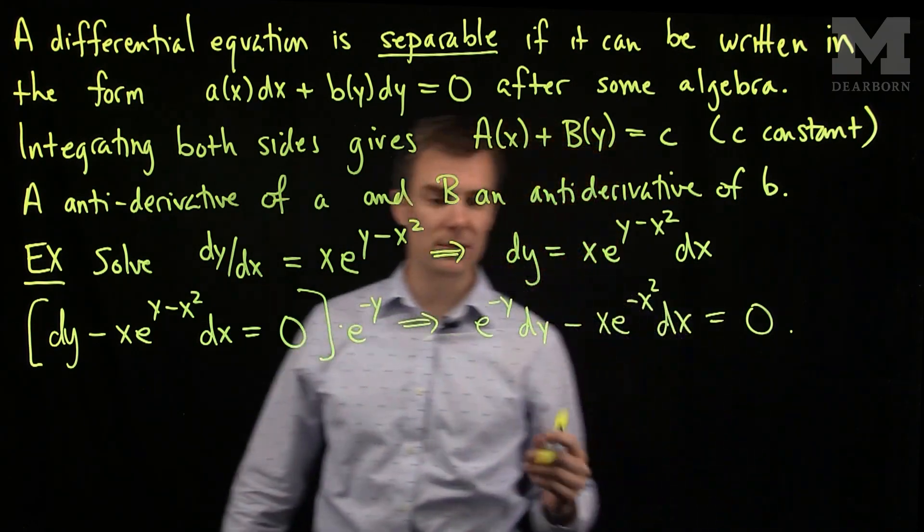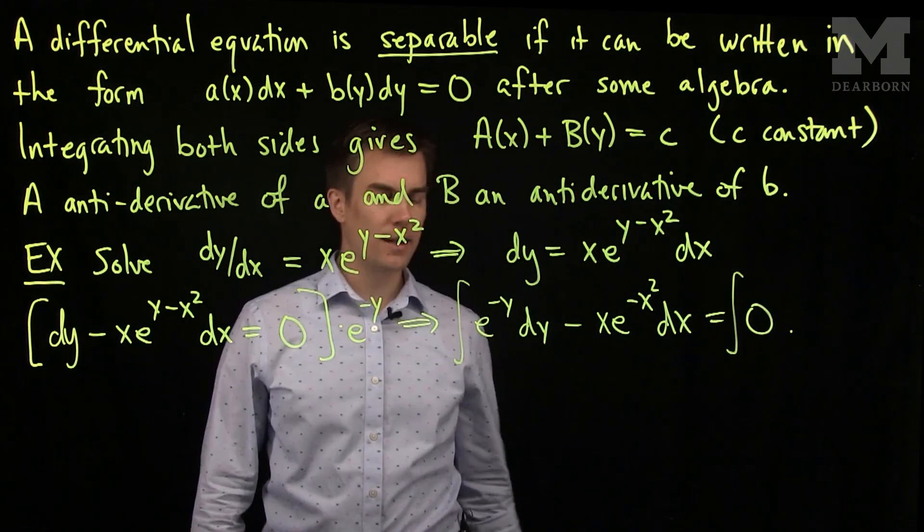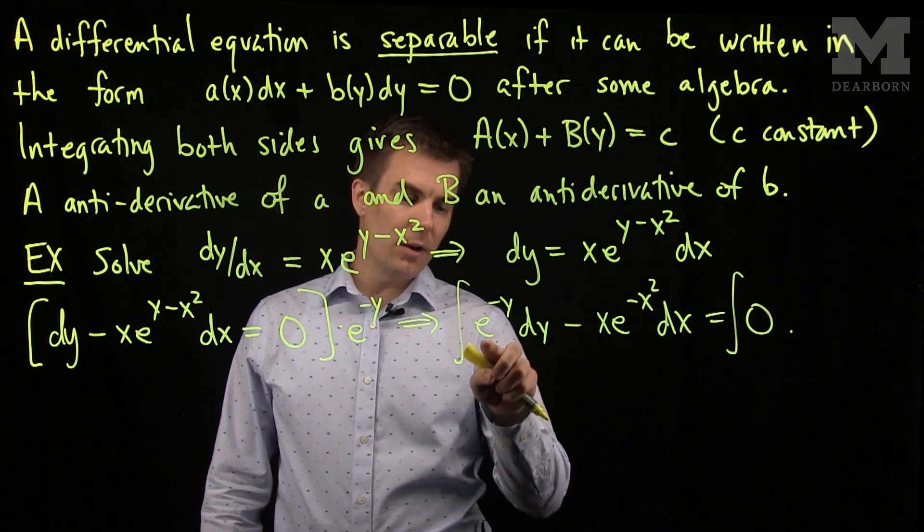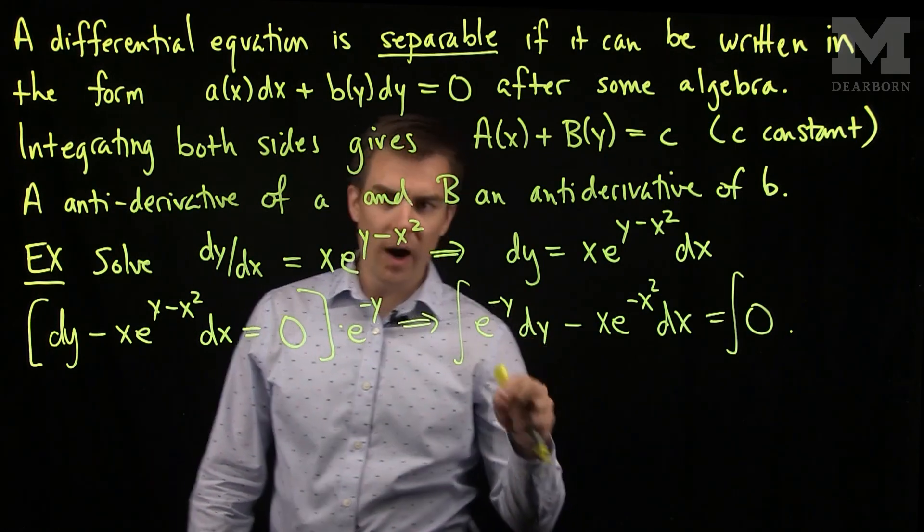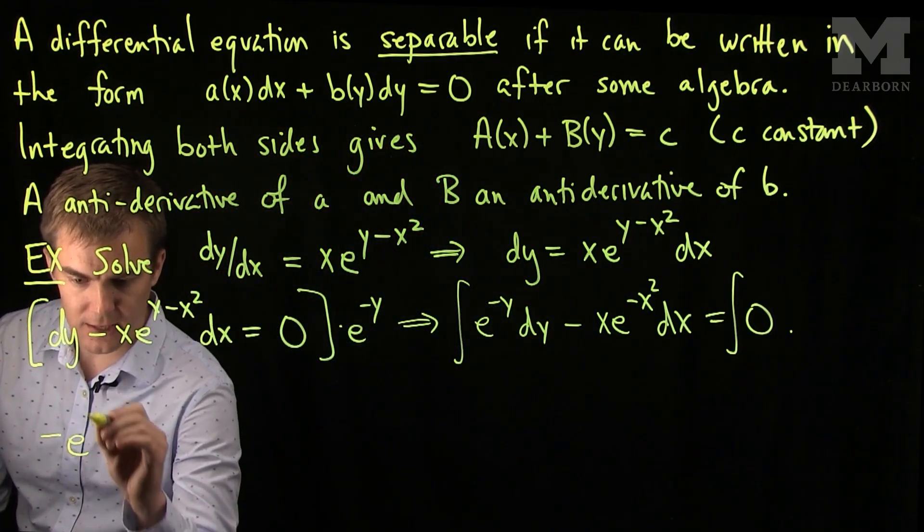Integrate the left-hand side. Integrate the right-hand side. Sometimes, the integrals are easy to do. The integral of e^(-y)dy, we can sort of think about in our head and get that one quickly. That will be -e^(-y).